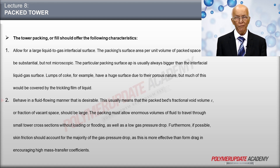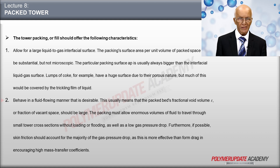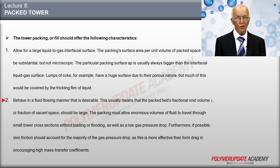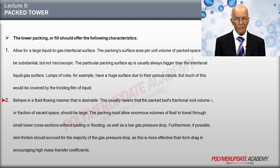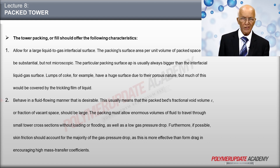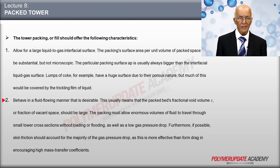Second, the packing should possess desirable fluid flow characteristics. This ordinarily means that the fractional void volume epsilon — the fraction of empty space in the packed bed — should be large. The packing must permit passage of large volumes of fluid through a small tower cross section without loading or flooding, and with low pressure drop for the gas. Furthermore, gas pressure drop should largely result from skin friction rather than form drag, since skin friction is more effective in promoting high values of the mass transfer coefficient.